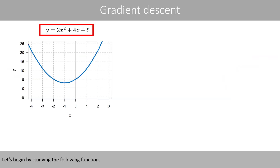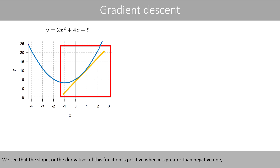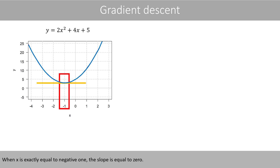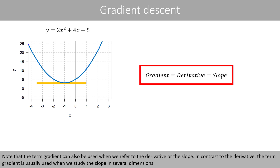Let's begin by studying the following function. We see that the slope, or the derivative, of this function is positive when x is greater than negative 1, whereas the function has a negative slope when x is less than negative 1. When x is exactly equal to negative 1, the slope is equal to zero. Note that the term gradient can also be used when you refer to the derivative or the slope. In contrast to the derivative, the term gradient is usually used when you study the slope in several dimensions.